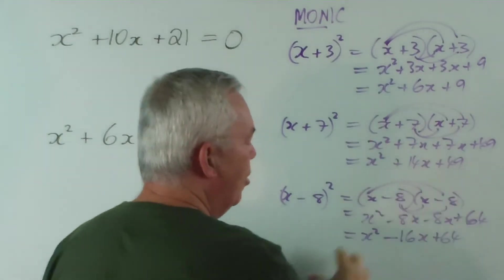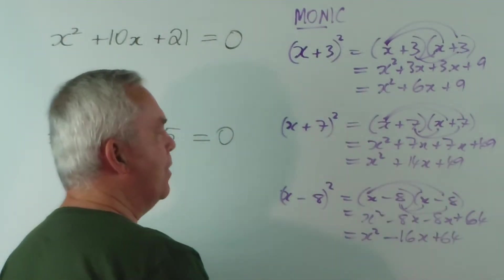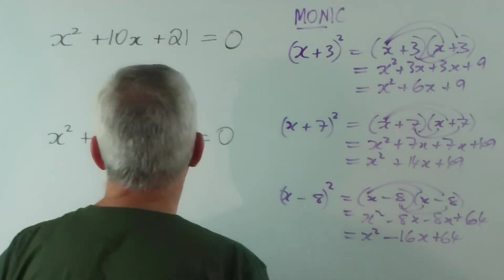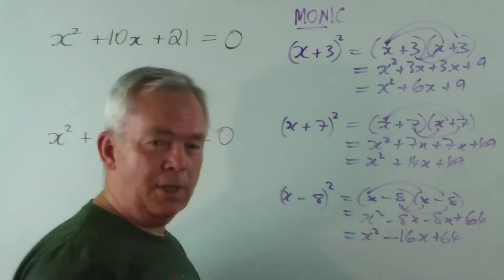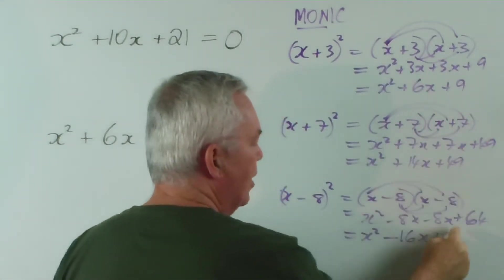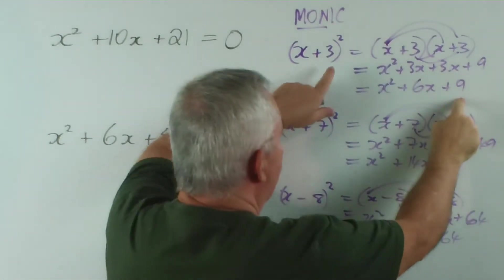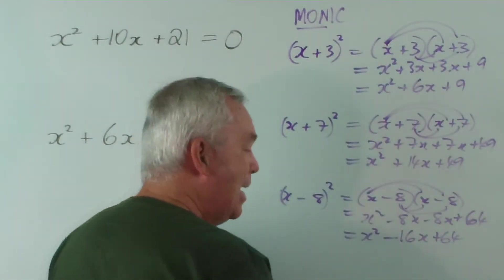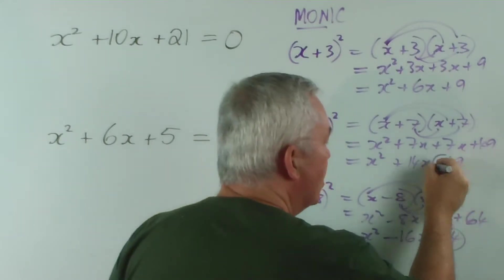So what do these have in common? Well, they all have an x² in common, and you notice these have an x². So we're looking at this pattern. Notice that the number at the end is a perfect square - 3 times 3 is 9, 7 times 7 is 49, and 8 times 8 is 64, and they're all positive.